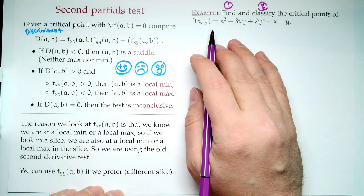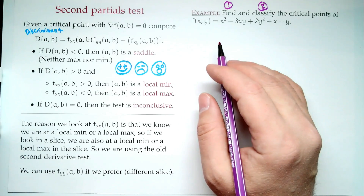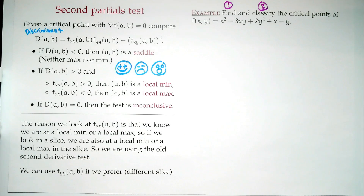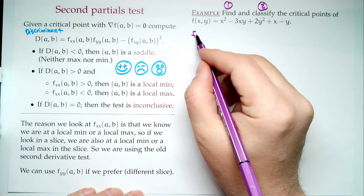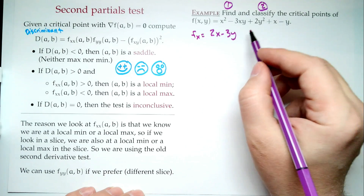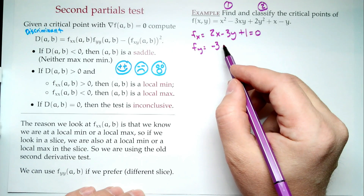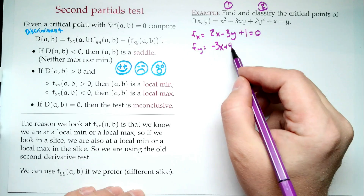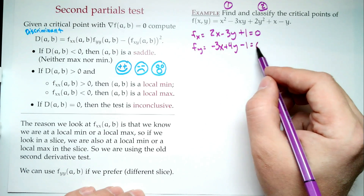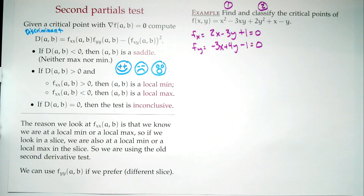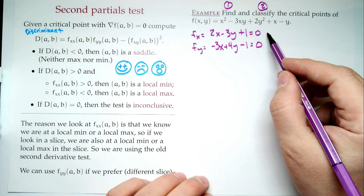To find critical points, we set the gradient to zero, meaning both partial derivatives are zero. So: f_x = 2x - 3y + 1 = 0, and f_y = -3x + 4y - 1 = 0. Now we have two equations, two unknowns — and we solve, using substitution.